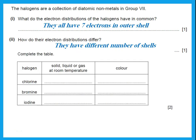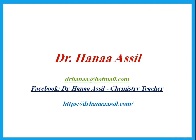This is a table that wants you to tell me the state and the color of each one. So you should remember chlorine is a green gas, bromine is a red-brown liquid, iodine is a gray solid.